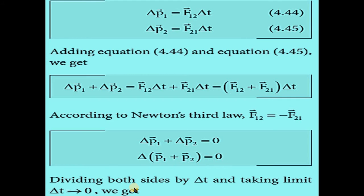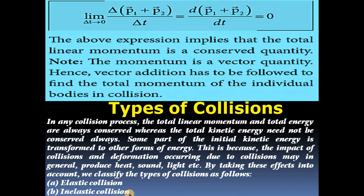Here Δ is the common value, so removing the common term: Δ(p₁ vector + p₂ vector) equals zero. Dividing both sides by Δt and taking the limit as Δt approaches zero, we get d(p₁ vector + p₂ vector)/dt equals zero.